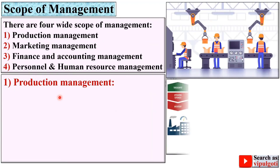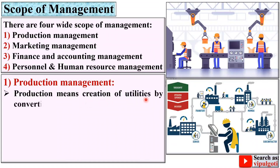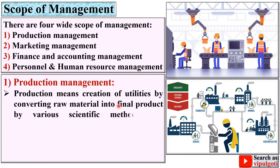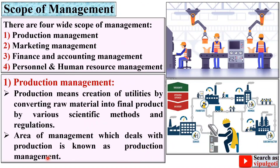First, production management. As you can see from the figure, whenever there is a production-based industry, this is a very crucial scope of management. Production means creation of utilities by converting raw material into final product by various scientific methods and regulations. The area of management which deals with production is known as production management.